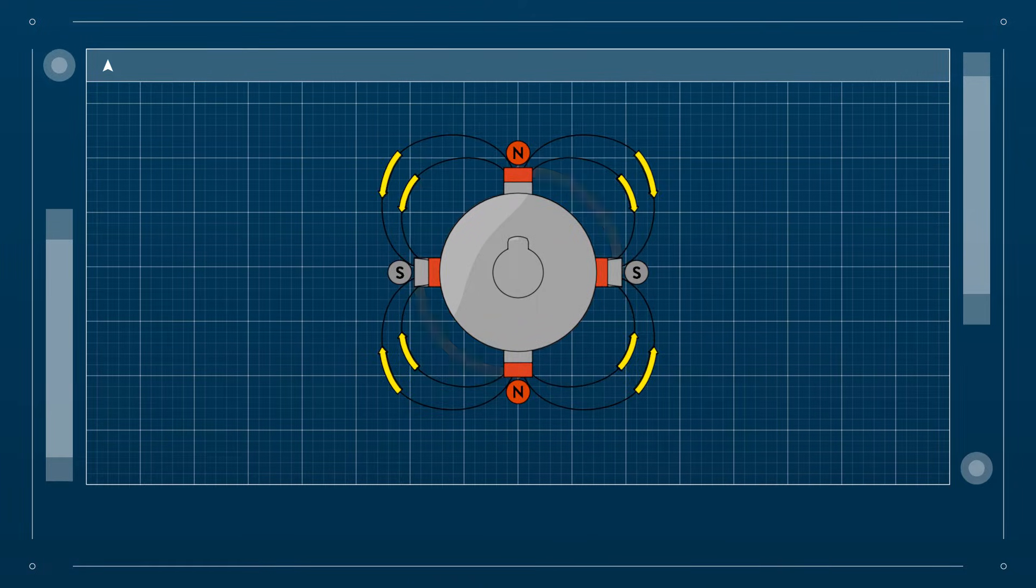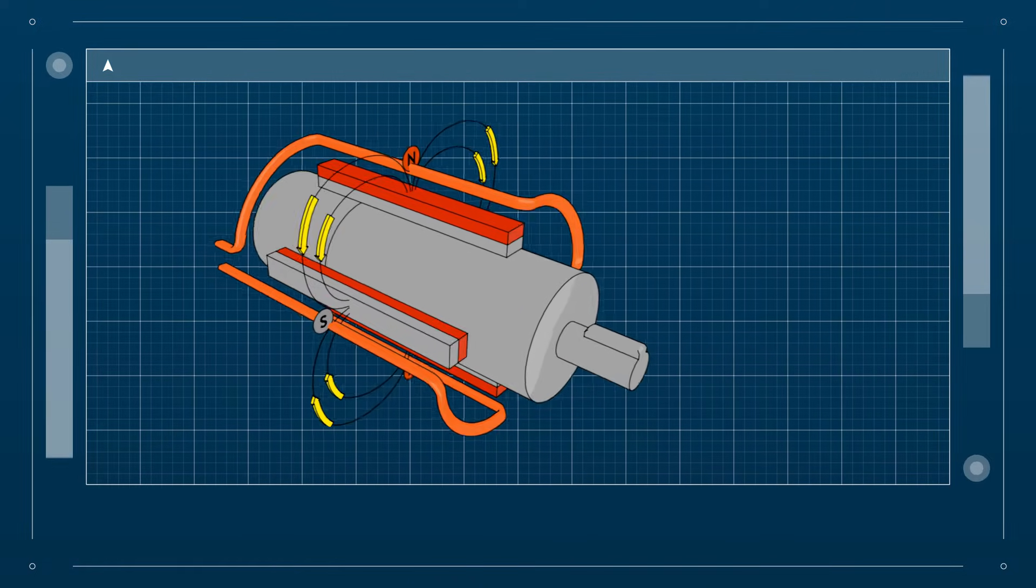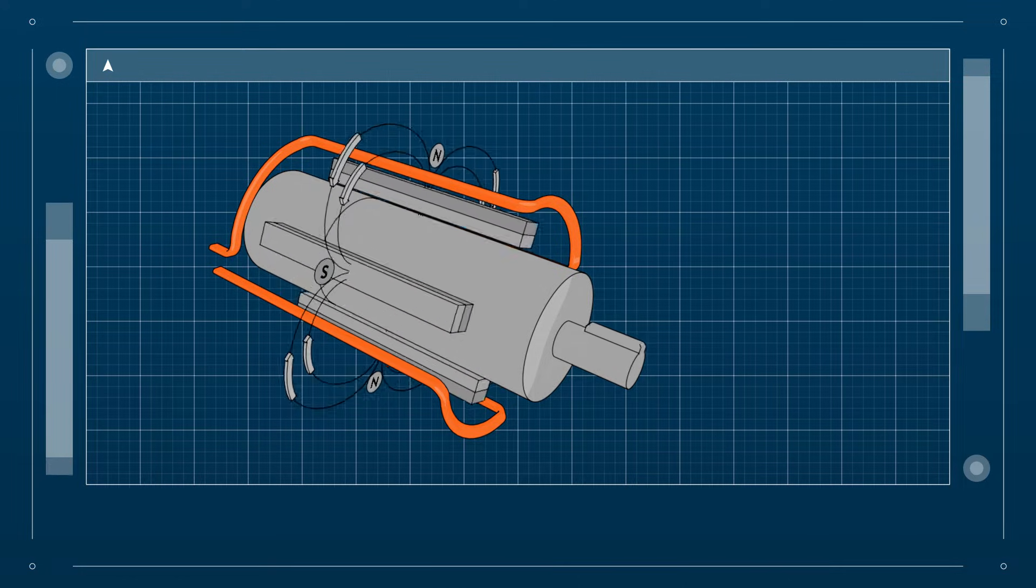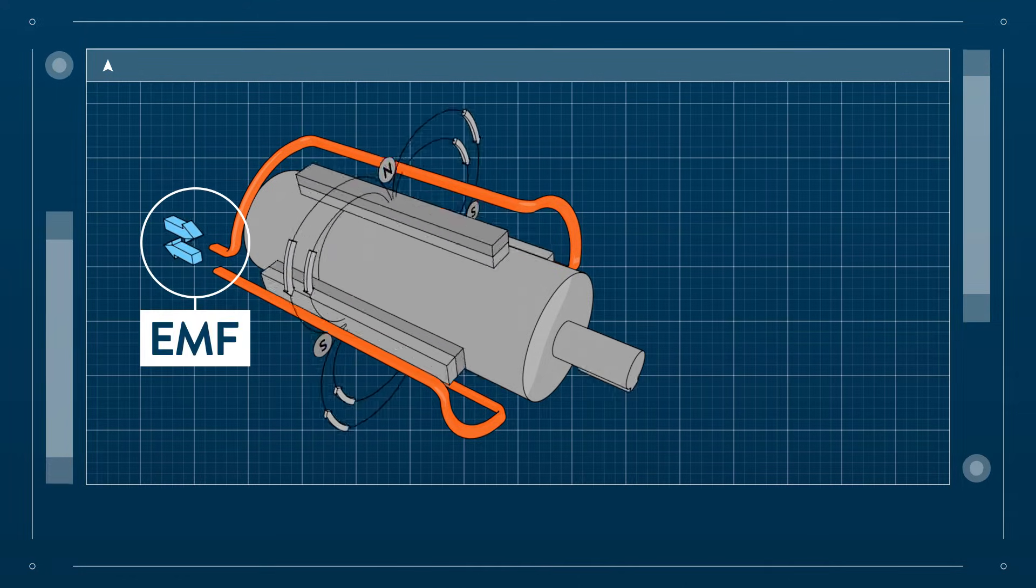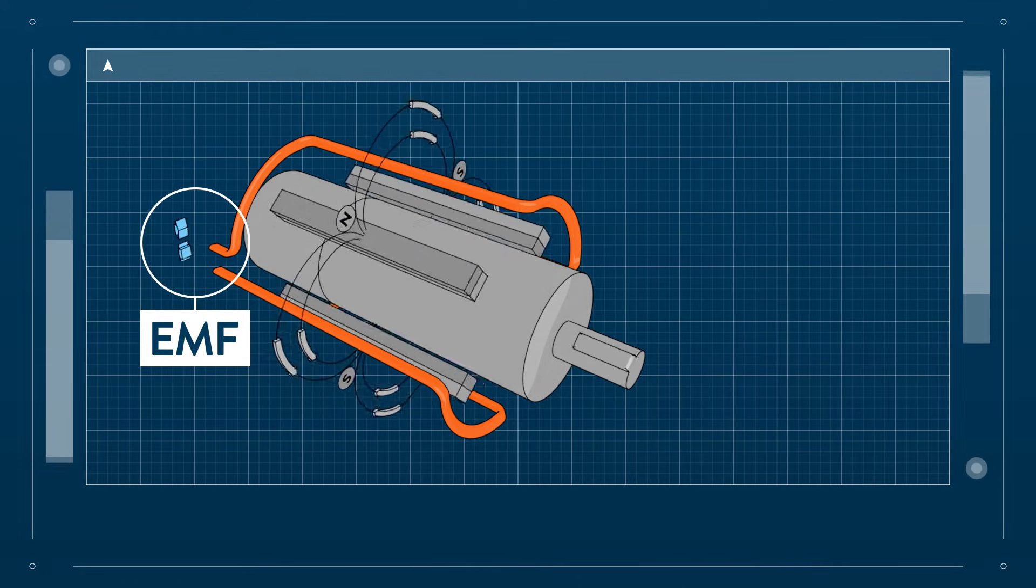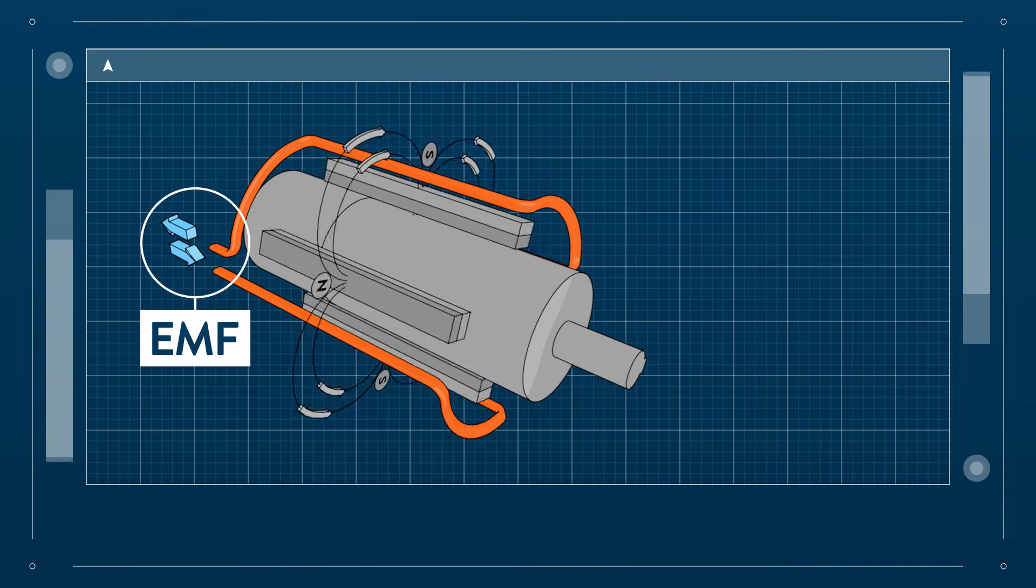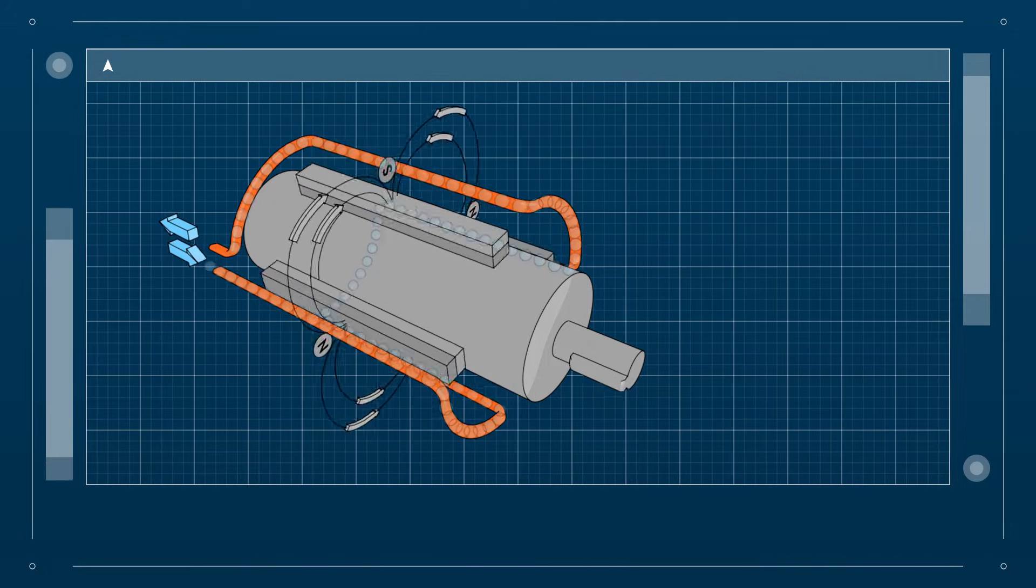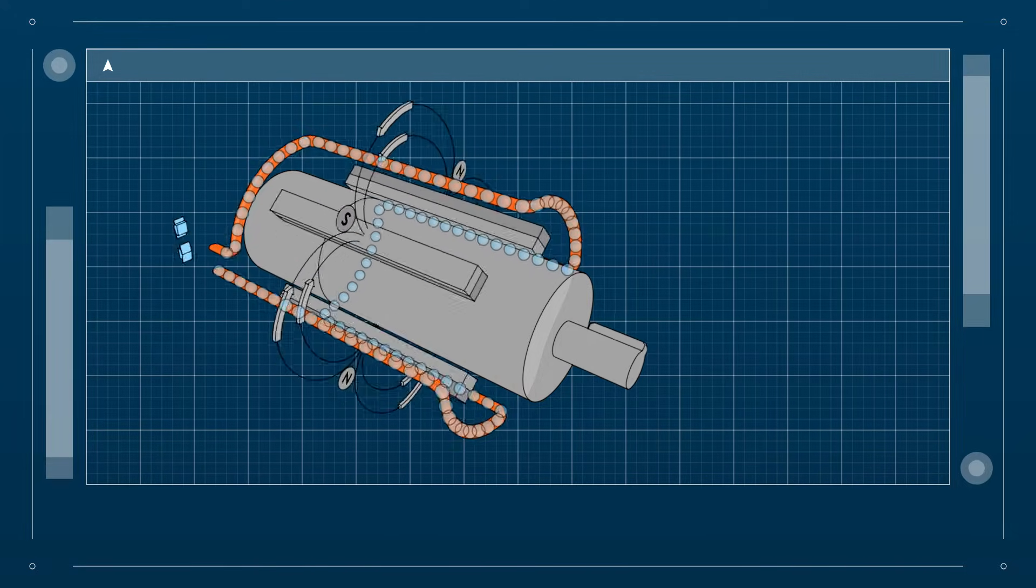When an armature coil is wrapped around a rotor, the moving magnetic flux creates an alternating electromagnetic force in the coil. The electrons inside the material are disturbed by the magnetic field and are forced to move in an alternating direction.